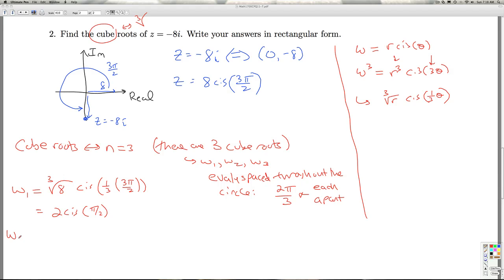So that means to get W2, all I've got to do is keep the R value the same, all I've got to do is add 2 pi over 3 to the argument. So what's pi over 2 plus 2 pi over 3? Well, the common denominator there is 6. This gives me 3 pi over 6, this gives me 4 pi over 6, so I get 7 pi over 6. So that's W2.